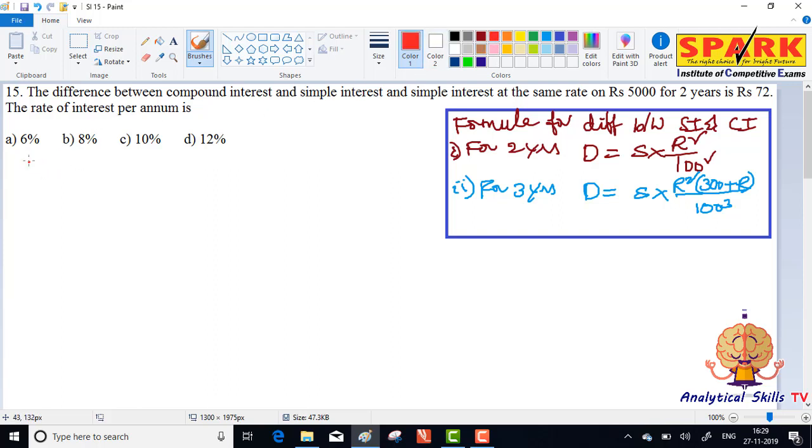So, we have the principal or sum is equal to 5000 rupees. The difference between simple interest and compound interest for two years is rupees 72.